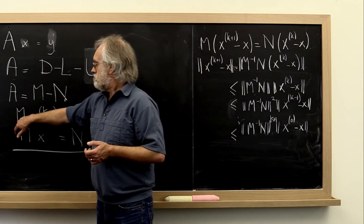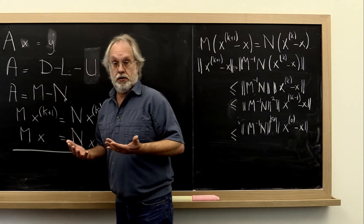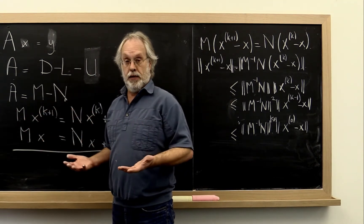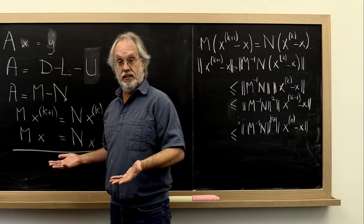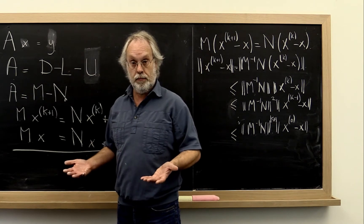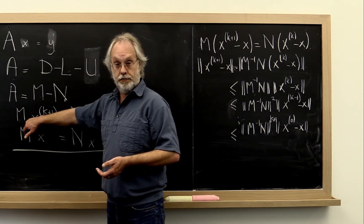And then what made the Jacobi iteration so nice? Well, solving with a diagonal matrix, especially when the diagonal matrix is just four times the identity, is particularly cheap. So that's good. It's convenient.